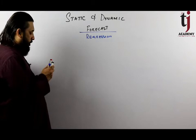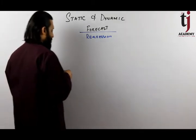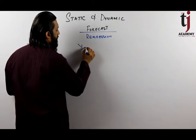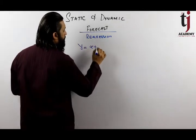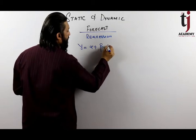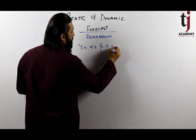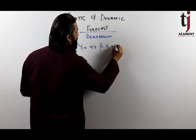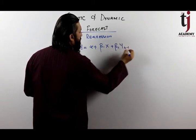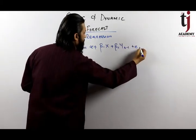For example, we have a model: y is equal to alpha plus beta 1 times x, plus beta 2 times y(t-1), plus an error term.